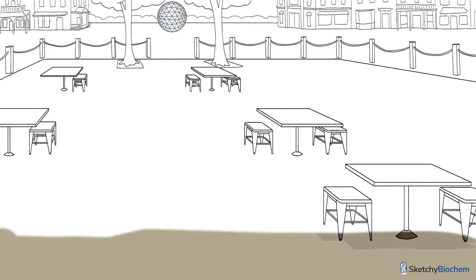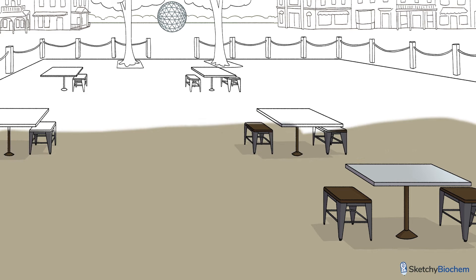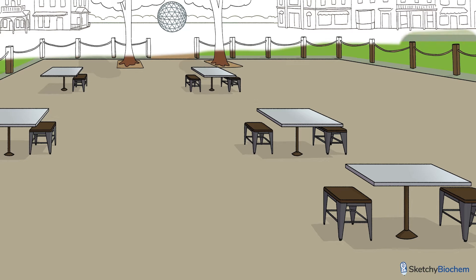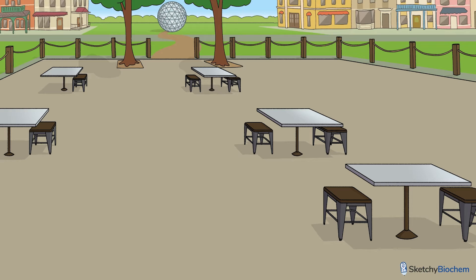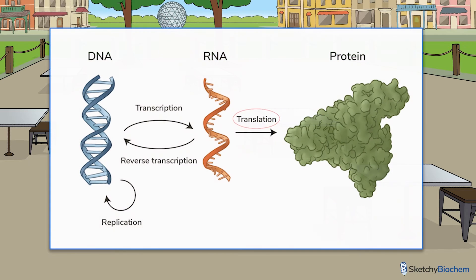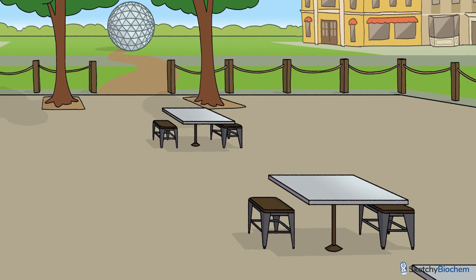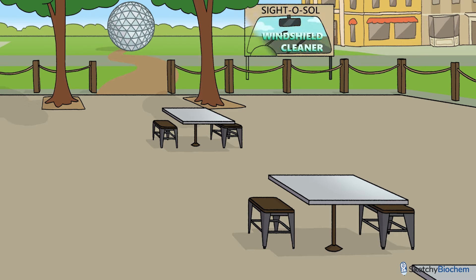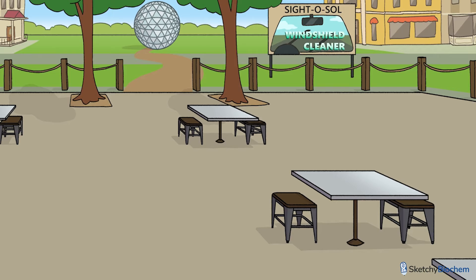You're probably hungry from all this talk about proteins, so let's grab lunch at Epnot's International Food Court — a diverse collection of mouth-watering foods. Today's special is dim sum. So what do you need to know about translation? We'll begin by drawing this CiteOSOL billboard to remind you that intracellular proteins are made in free-floating ribosomes found in the cytosol. On the contrary, proteins that will eventually be secreted are made in the rough ER.